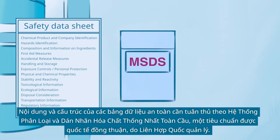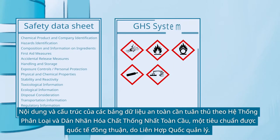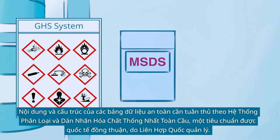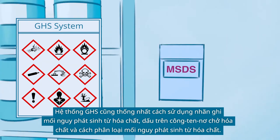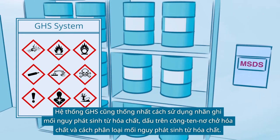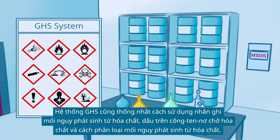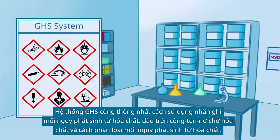The content and structure of Safety Data Sheets should be in line with the Globally Harmonized System of Classification and Labeling of Chemicals, which is an internationally agreed-upon standard managed by the United Nations. The GHS system also harmonizes the use of chemical hazard labels, markings for chemical containers and the chemical hazard classification.